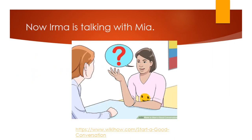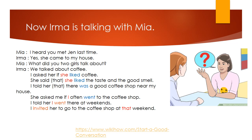Now Irma is talking with Mia. I heard you met Jen last time. Yes, she came to my house. What did you two girls talk about? We talked about coffee. I asked her if she liked coffee. She said she liked the taste and the good smell. I told her there was a good coffee shop near my house. She asked me if I often went to the coffee shop. I told her I went there at weekends. I invited her to go to the coffee shop that weekend.